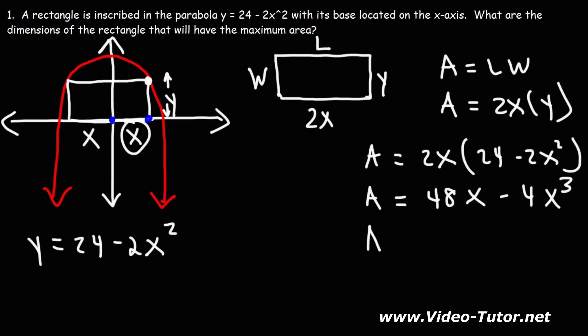What we're going to do is find the derivative of the area function. Whatever the objective function is, you want to find the first derivative of that function and set it equal to 0. And solve for the variable that you need to solve for. In this case, it's x. The derivative of x to the first power is 1. The derivative of x cubed is 3x squared. And we're going to set that equal to 0.